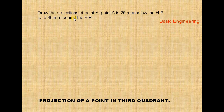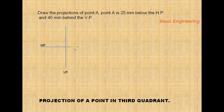Below the HP and behind the VP belongs to the fourth angle projection. If you take coordinates like this, this represents the horizontal plane and this represents the vertical plane — first angle, second angle, third angle. This is the third quadrant; the point lies in the third quadrant like this.